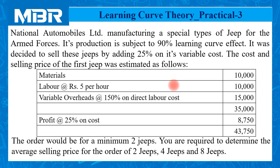The order would be for a minimum of two Jeeps. You are required to determine the average selling price for orders of two Jeeps, four Jeeps, and eight Jeeps. We need to prepare our cost sheet for two, four, and eight Jeeps and calculate the sell price of these batches by adding 25% profit on total cost.